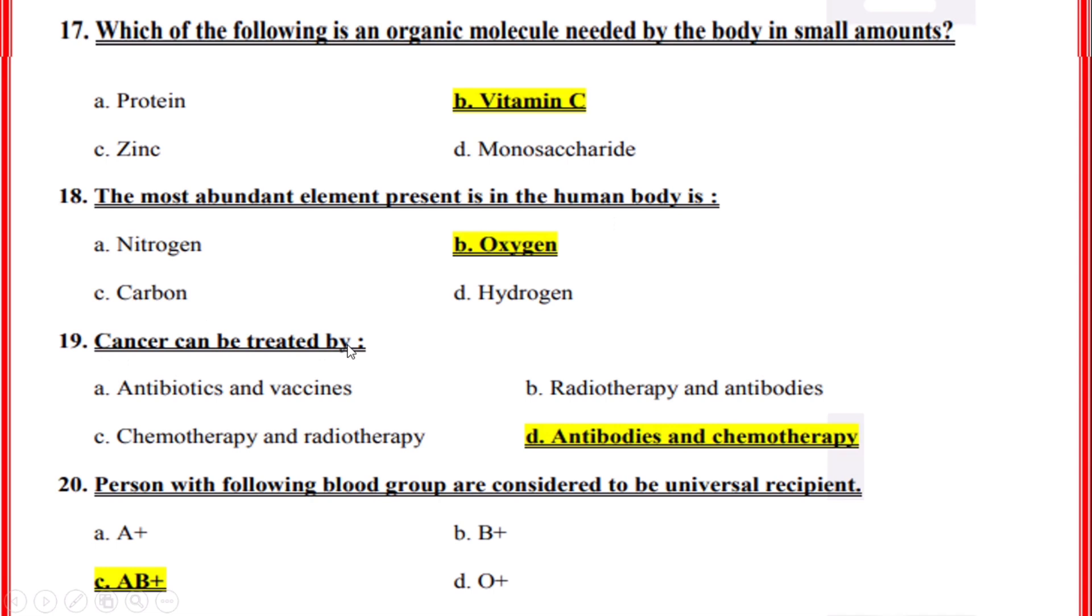Cancer can be treated by? Correct option: D, Antibodies and chemotherapy. Persons with the following blood group are considered to be universal recipients? Correct option: C, AB positive.